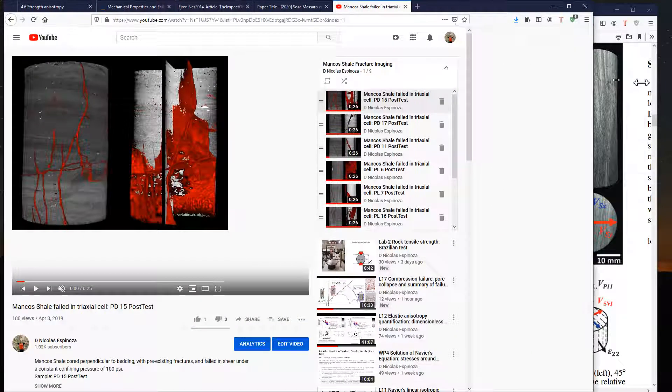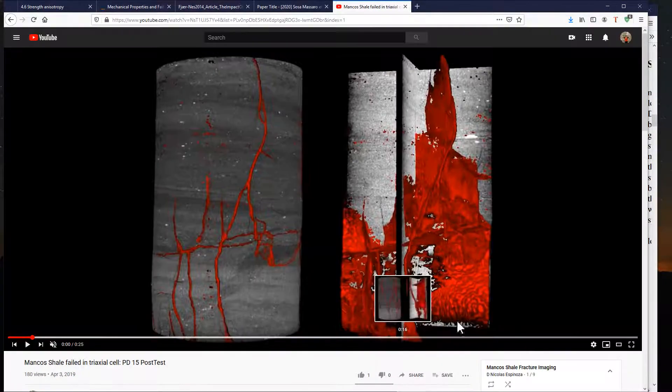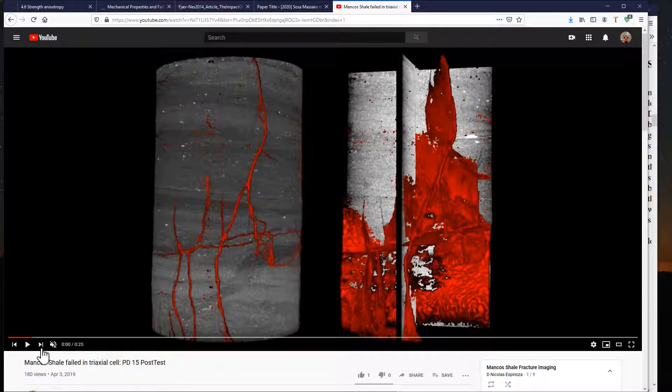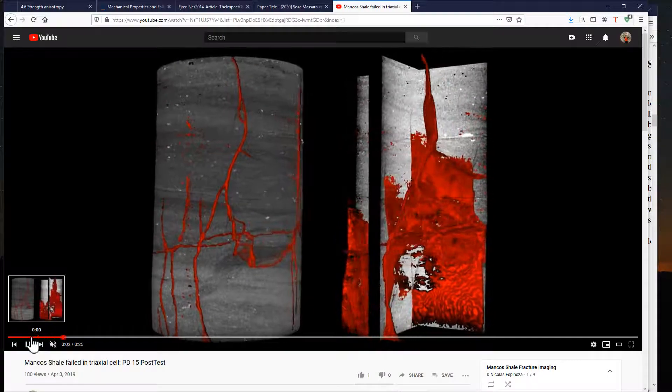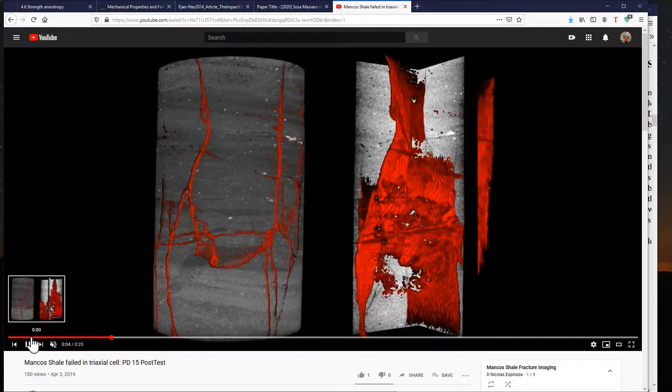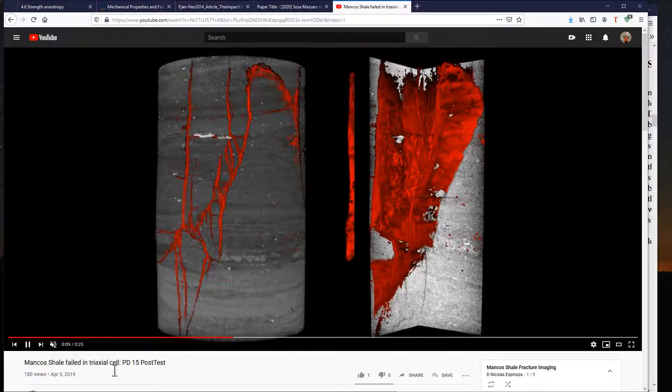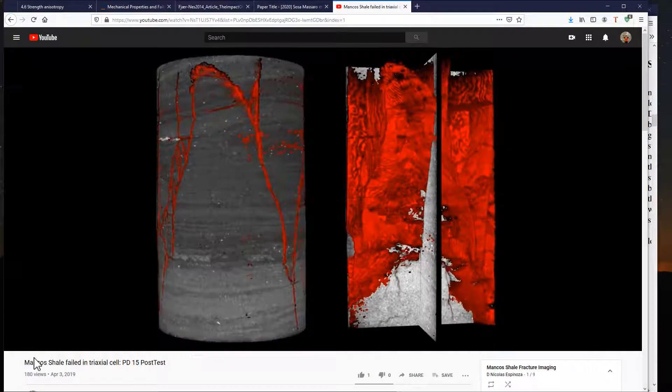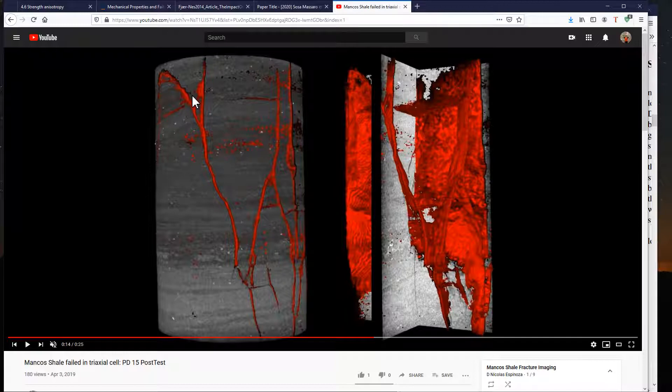Here you see videos which result from x-ray tomography from samples that we broke in the laboratory. For example, this is the shale I was sharing with you before. In this case, it was failed with loading in axial direction, and you can see the bedding is horizontal. So, when the rock is broken, the fracture has to go through all those layers and break all of those layers. You can see here the shear fracture.